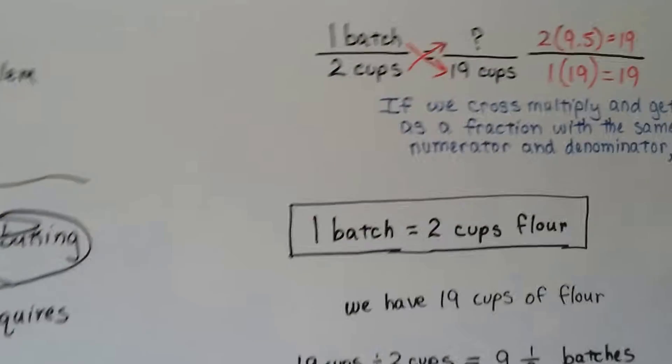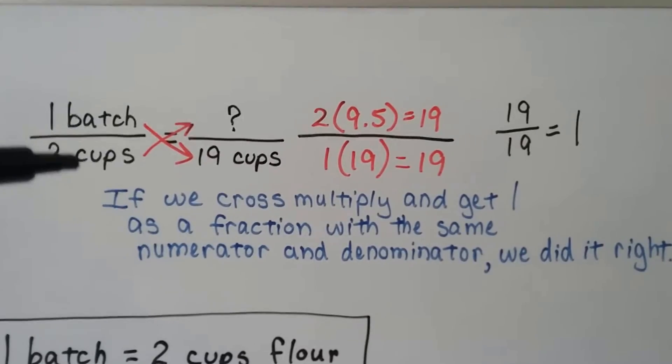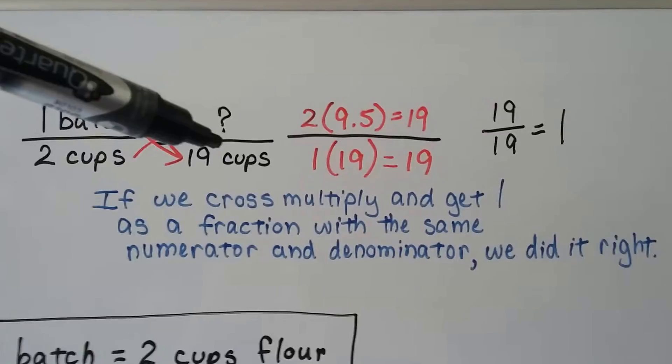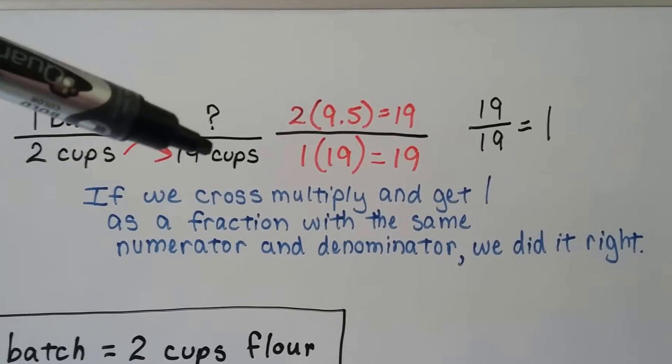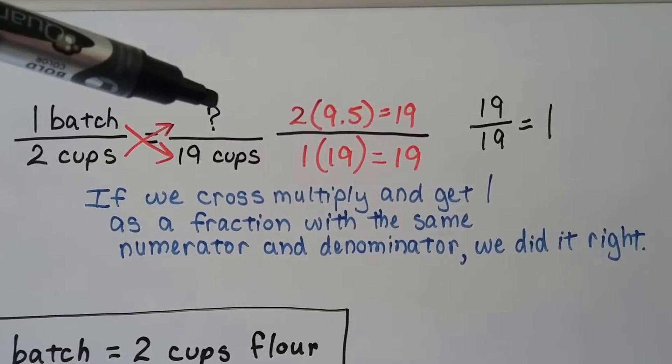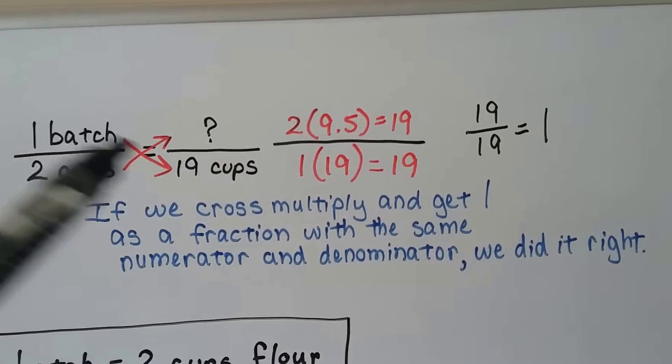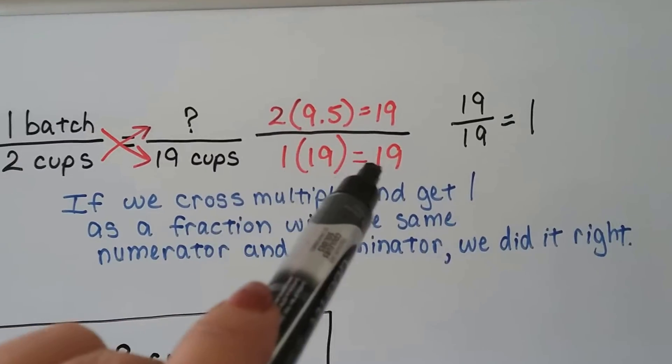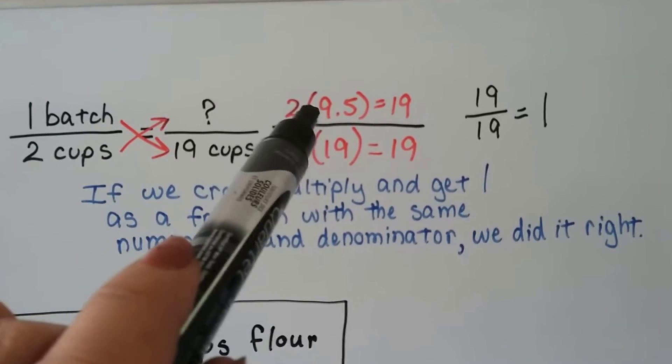As a proportion, we can look at this as one batch over two cups. And it's going to equal some amount over 19 cups. It's going to be that amount of whole batches over 19 cups or the amount of batches I should say. What we do is we cross multiply the info we do have. One times 19 is equal to 19. Two times something is equal to 19.